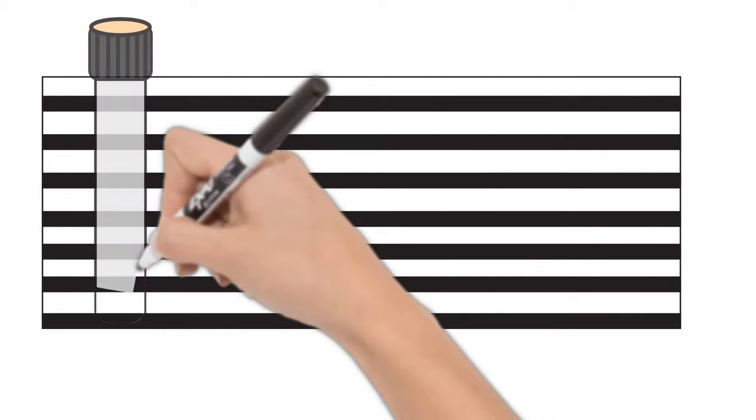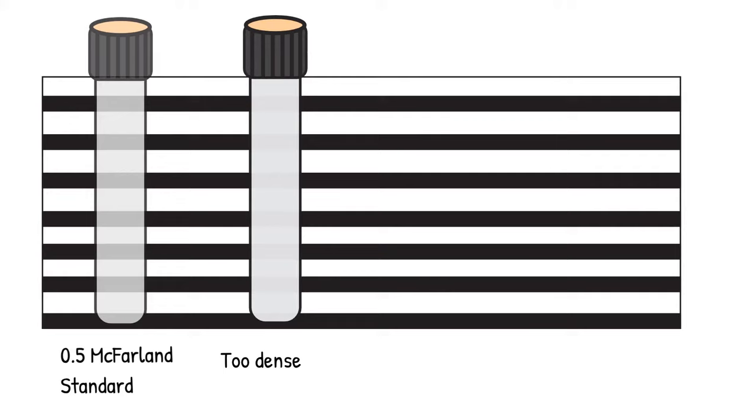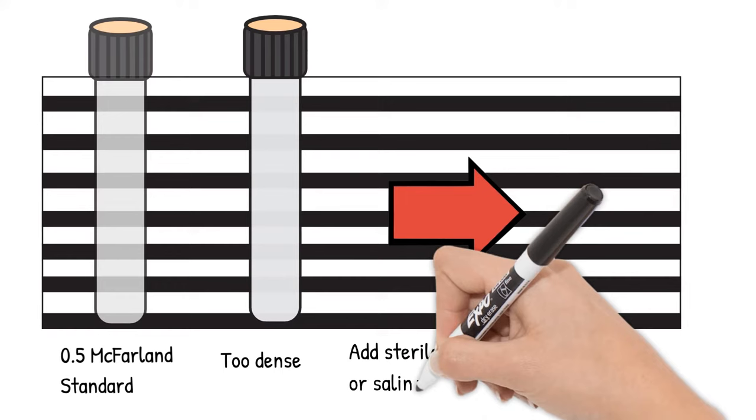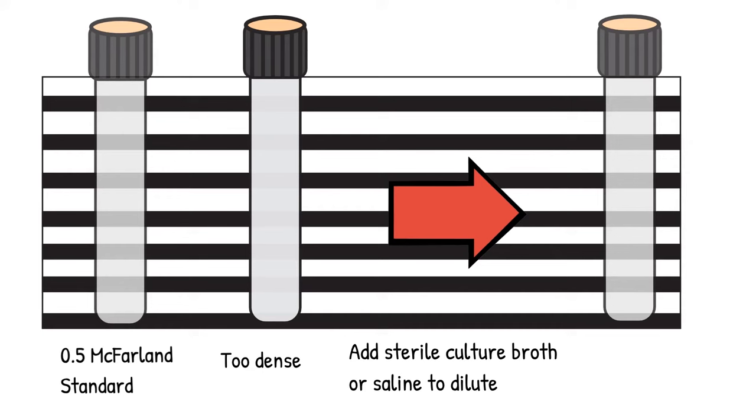If the suspension is too dense, it would be more difficult to see the lines through the bacteria suspension than through the 0.5 McFarland standard. In this case, you can either add sterile culture broth or saline to dilute the bacteria suspension until the turbidity is the same level.